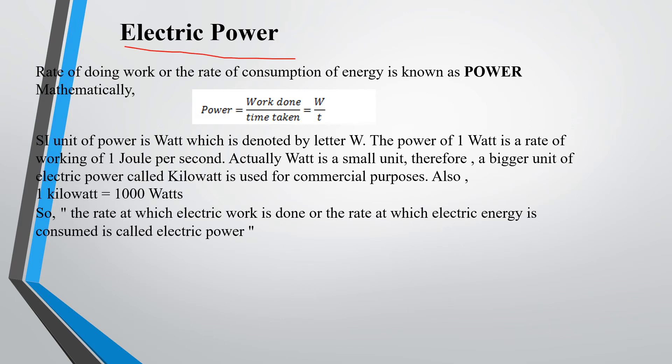Now we have electric power. Electric power is the rate of doing work or the rate of consumption of energy in the circuit. Power equals work done divided by time taken. The SI unit of power is watt, denoted by letter W. The power of 1 watt is the rate of working of 1 joule per second. Actually, watt is a small unit. Therefore, a bigger unit of electric power called kilowatt is used for commercial purposes. 1 kilowatt equals 1000 watts. The rate at which electric work is done or the rate at which electric energy is consumed is called electric power.